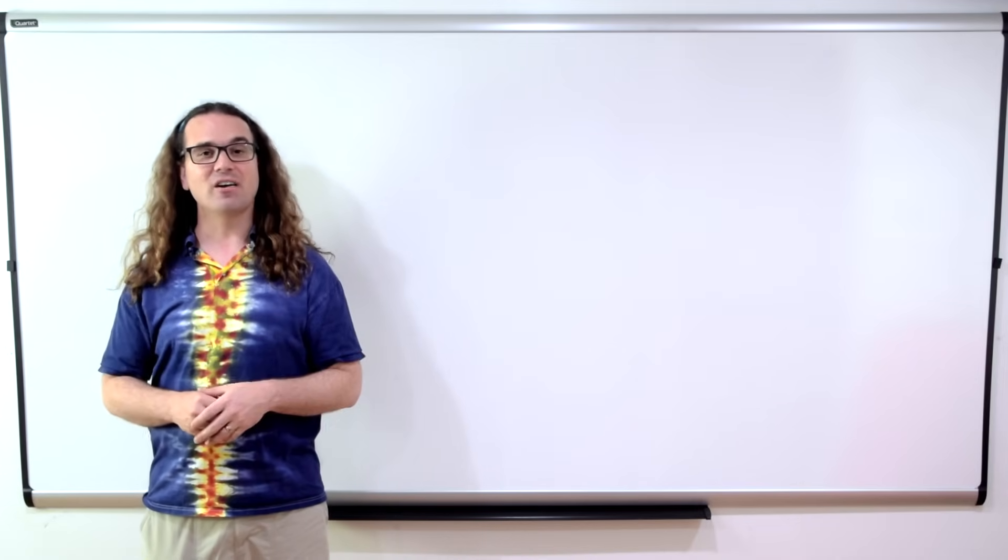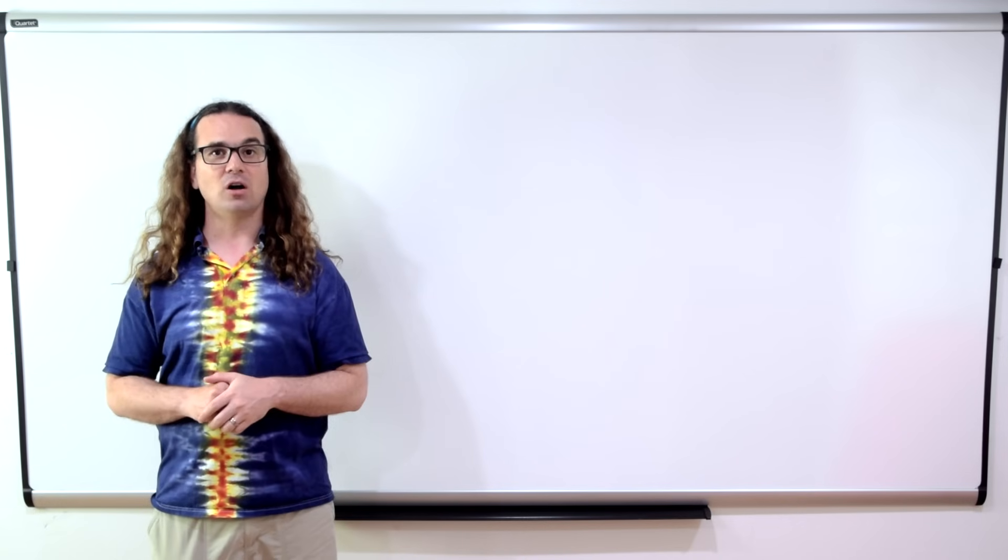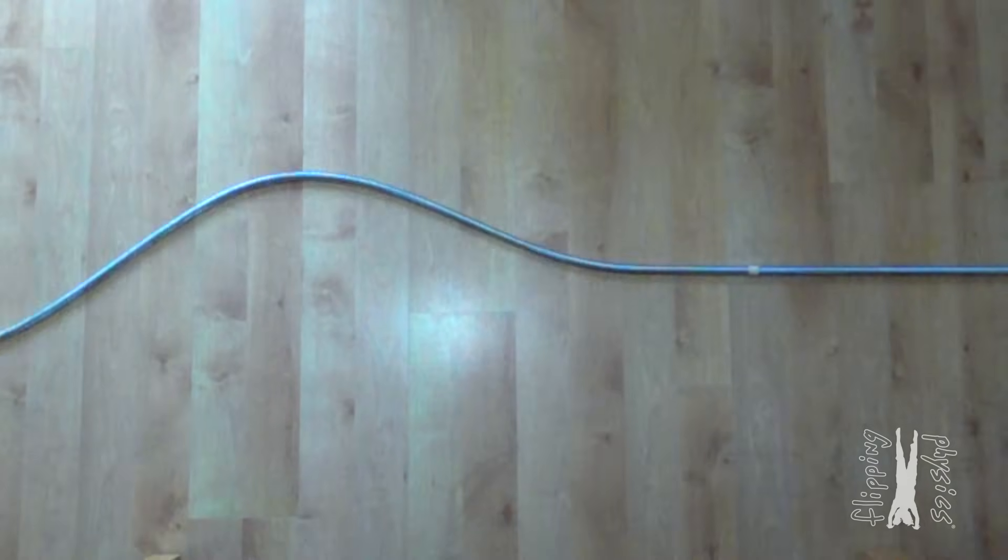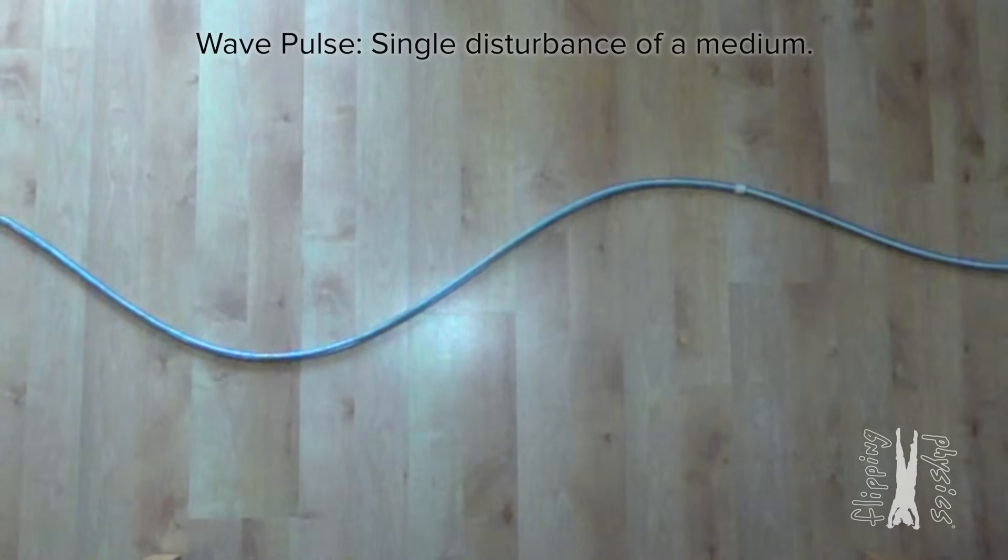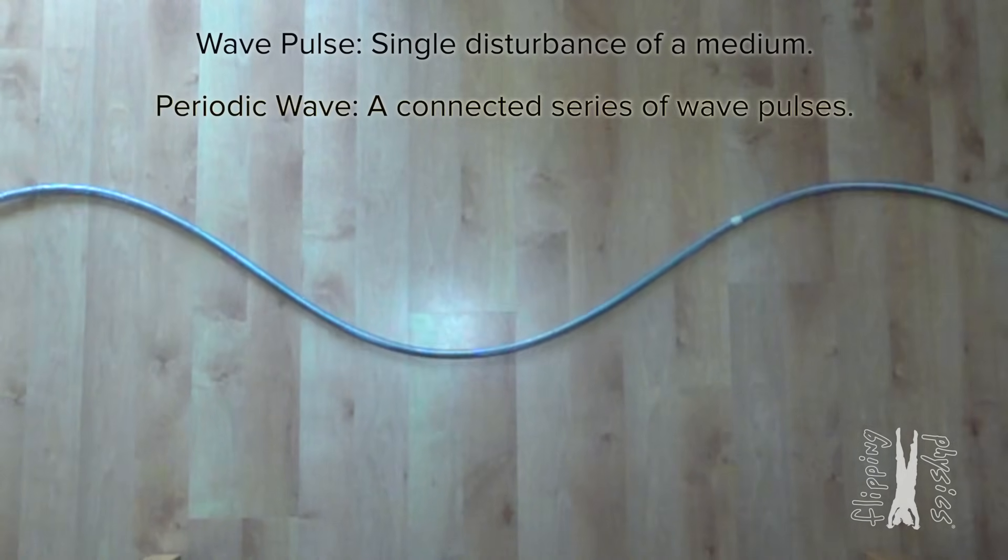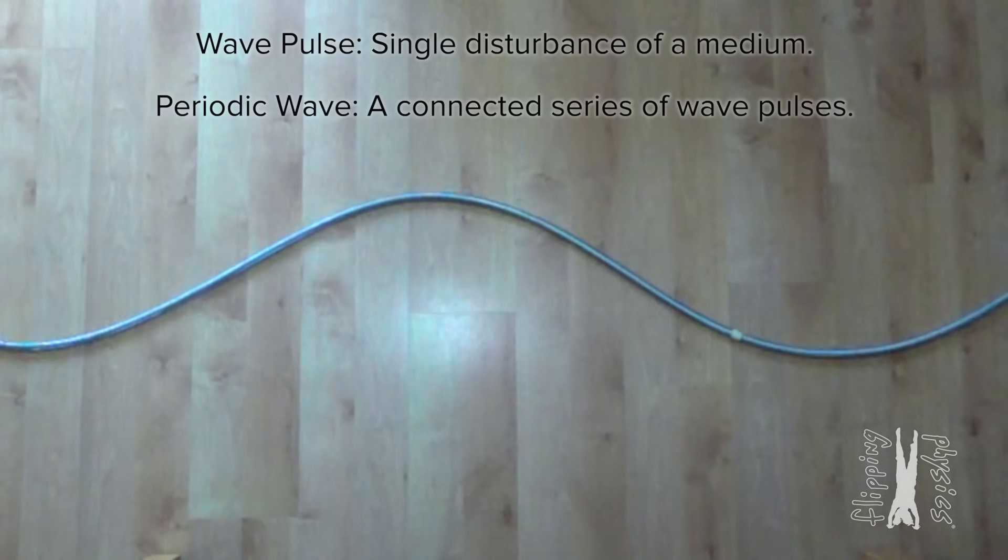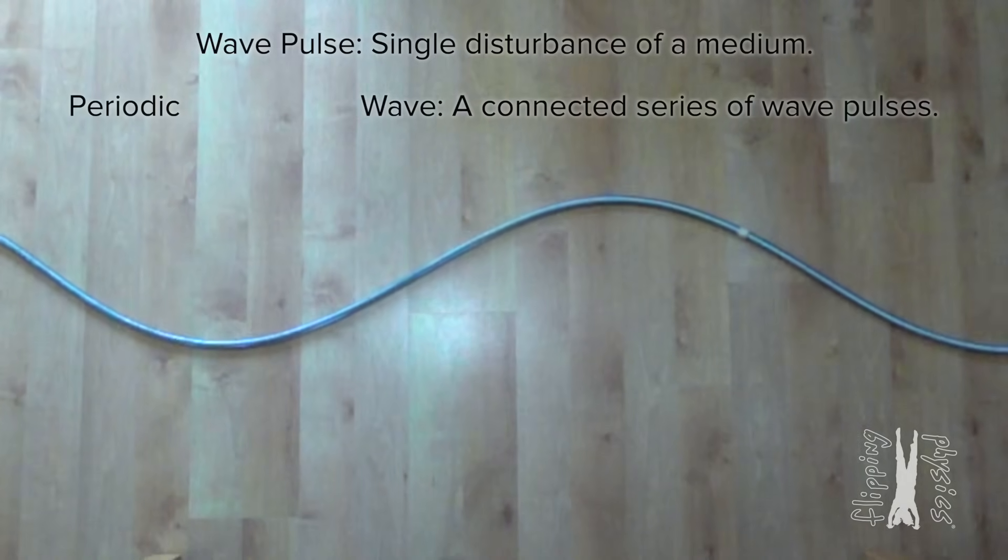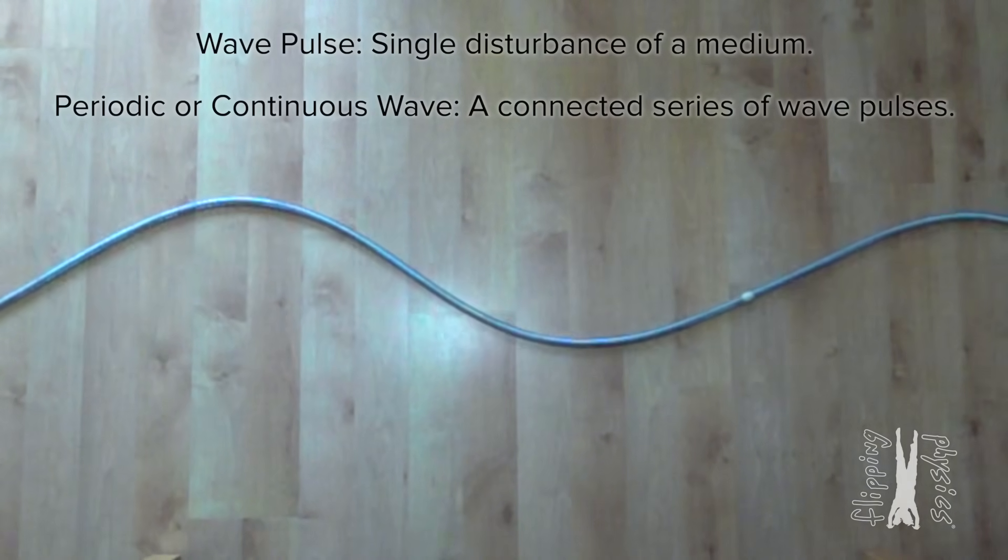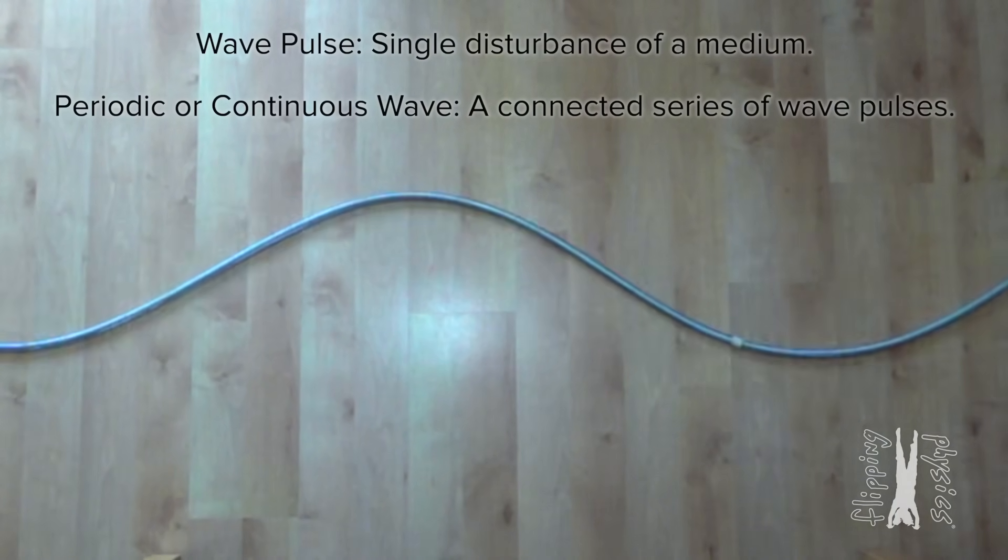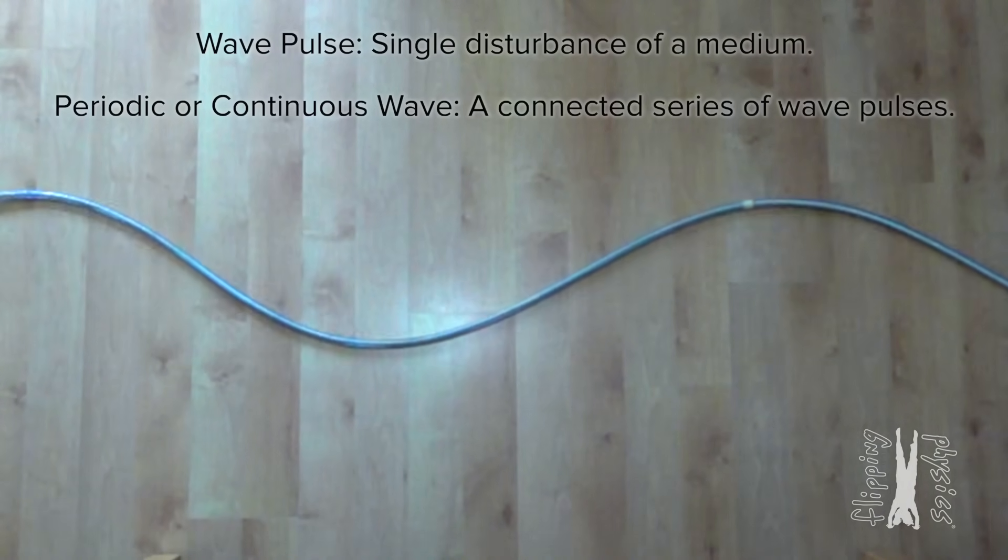What we have shown so far is a single wave pulse. We can also have something called a periodic wave. A wave pulse is a single disturbance of a medium, whereas a periodic wave is a connected series of wave pulses. A periodic wave is also sometimes called a continuous wave. Okay, a wave pulse is a single wave and a bunch of wave pulses connected to one another is a continuous or periodic wave.